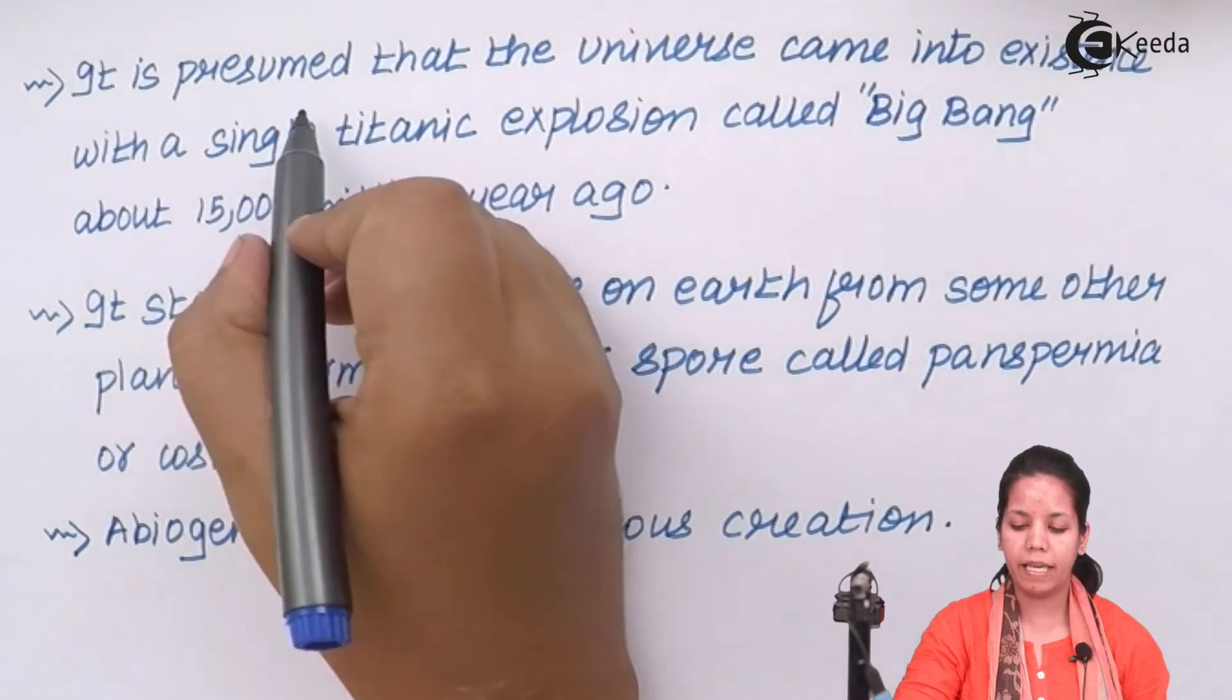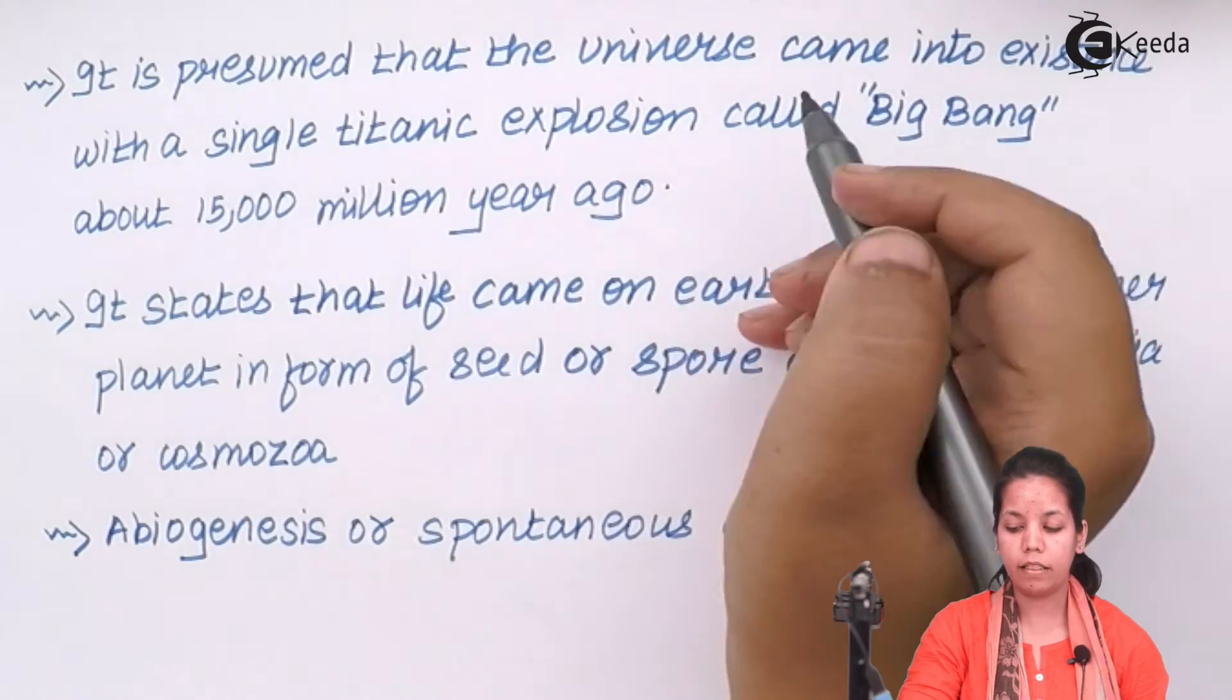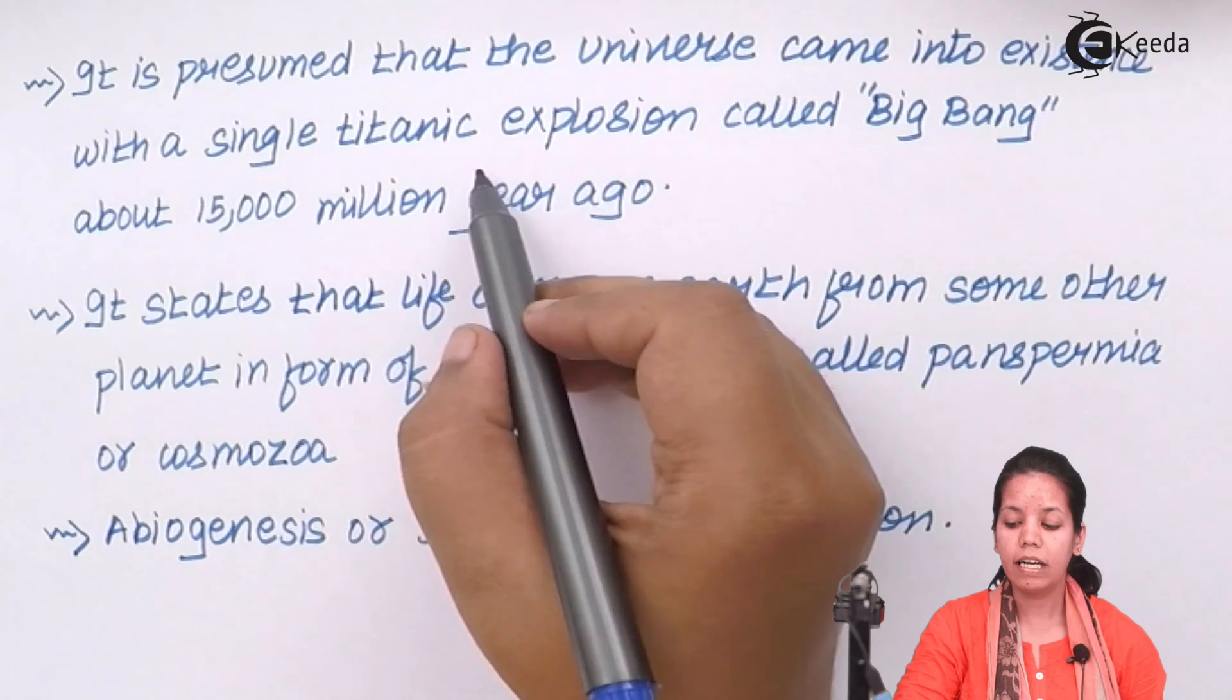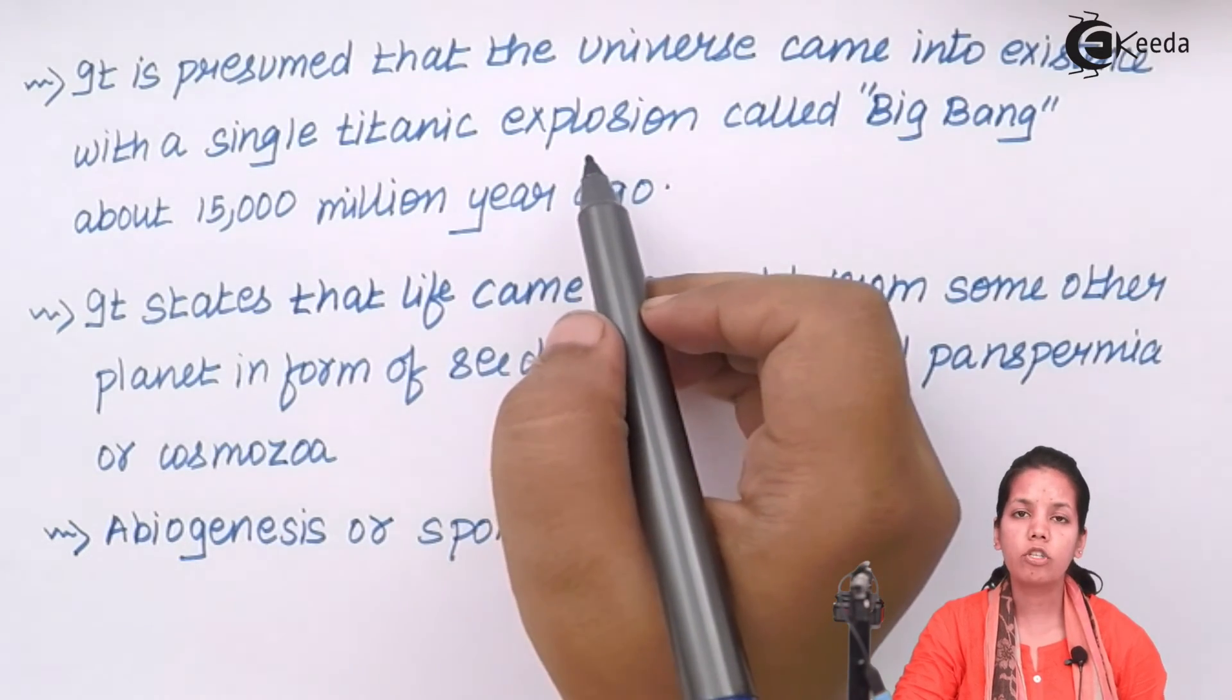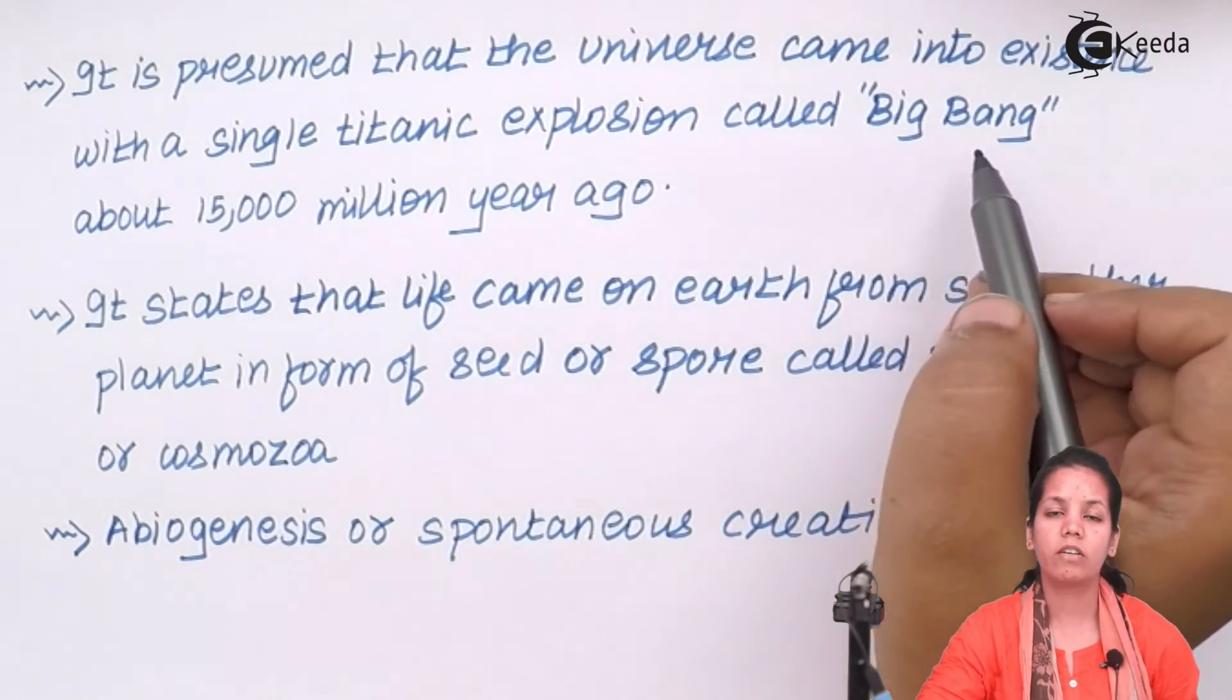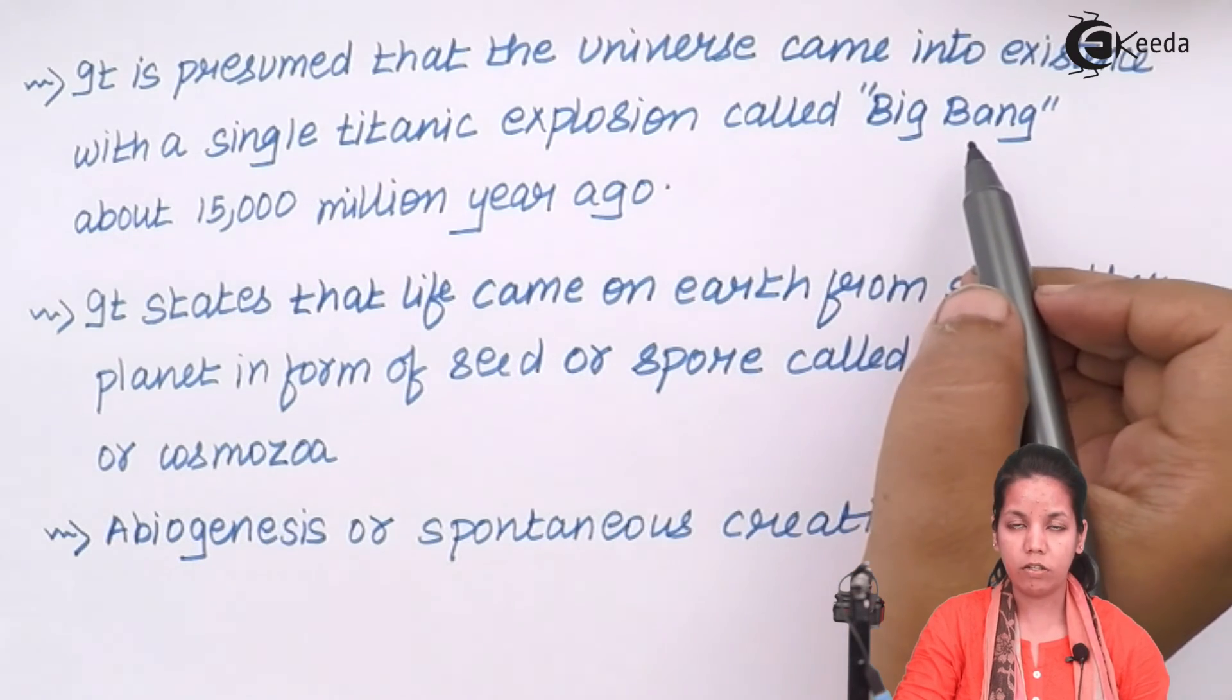It was basically presumed that the life or universe came into existence with just a single titanic explosion, which is precisely termed as the Big Bang Theory. Now this is a theory which doesn't have a proof, and according to this theory, earth came into existence after this.